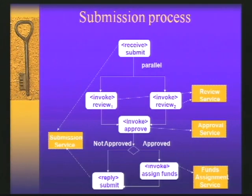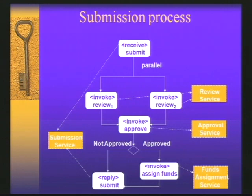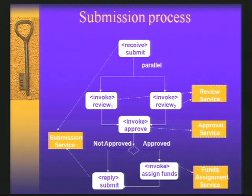Throughout the talk I will refer to this example: a process that implements a project proposal submission deployed inside an academic institution. The process consists of six main activities provided by four different web services. The submit activity allows a user to submit a project proposal and is provided by the submission service. Then we have the review operation provided by the review service and the approval operation provided by the approval service. Finally, we have the assign funds operation provided by the fund assignment service, which, once the project is approved, assigns a certain amount of funds to the project proposal.